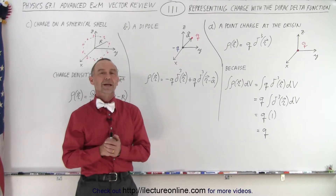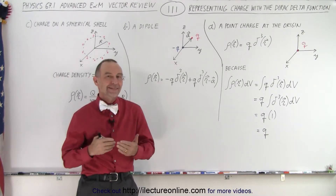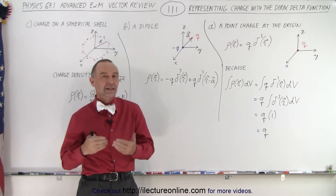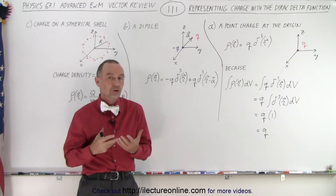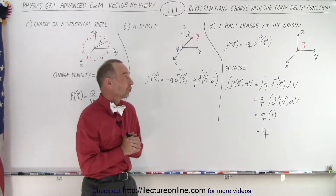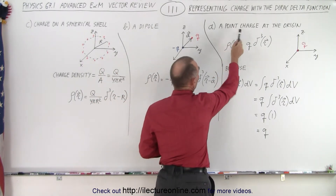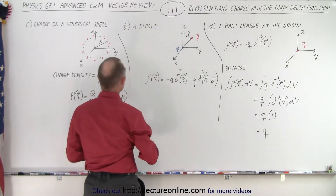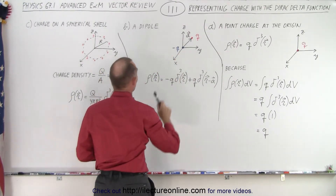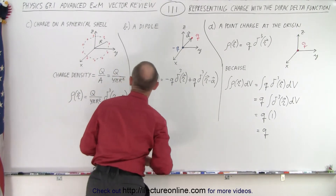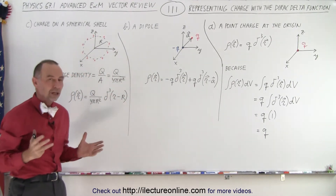Welcome to iLectroOnline. In this video we're going to see three examples where we can use the Dirac delta function in three dimensions to represent charge in three different situations. First, we can represent a point charge at the origin. Secondly, we can represent the dipole where one charge is at the origin and another charge is away from the origin. And thirdly, we can represent the charge on a spherical shell.